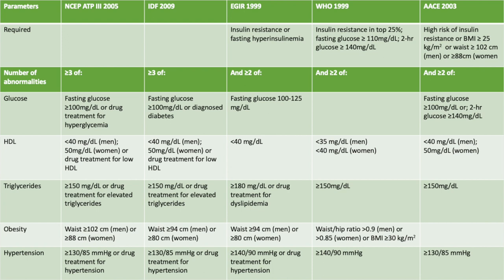The AACE also has a required parameter of high risk of insulin resistance, or BMI of more than 25 kg per m², or waist circumference of more than 102 cm for men, or 88 cm for women, and two of the following: fasting glucose of more than 100 mg per deciliter, or two-hour glucose of more than 140 mg per deciliter; HDL of less than 40 for men and 50 for women; triglycerides of more than 150 mg per deciliter; and blood pressure above 130 over 85.